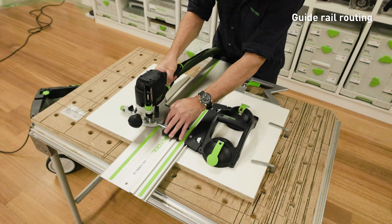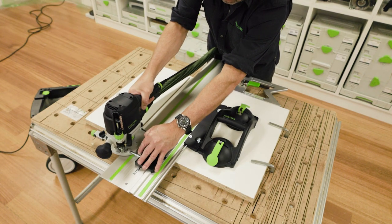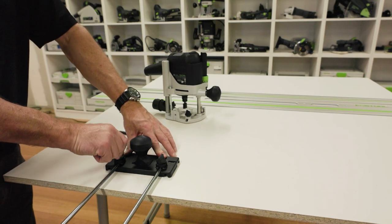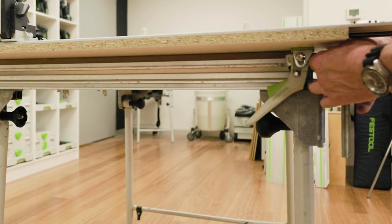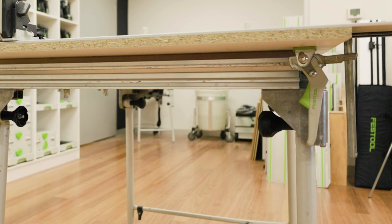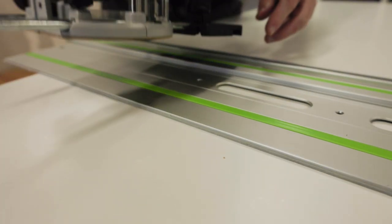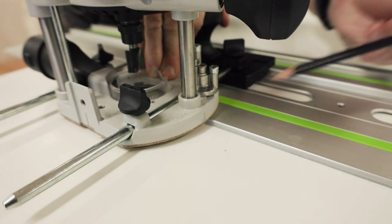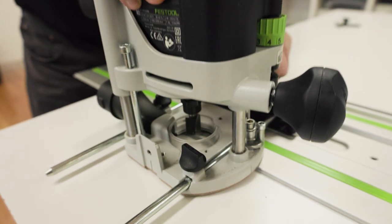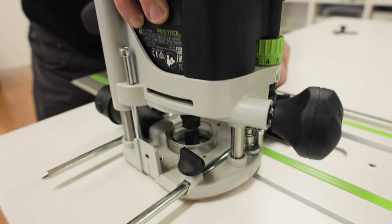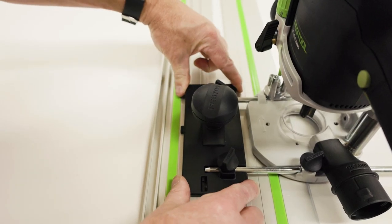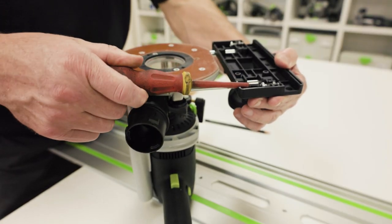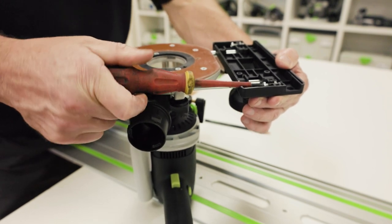The guide system facilitates routing straight grooves. Fix the guide stop to the plate with the guide rods of the parallel guide. Fasten the guide rail with the FSZ screw clamps to the workpiece. Make sure that the safety distance of 5mm between the front edge of the guide rail and the cutter or the groove is observed. Place the guide stop onto the guide rail. To ensure a backlash free guidance of the router, you can adjust two screws to remove lateral play with a screwdriver through the side openings.